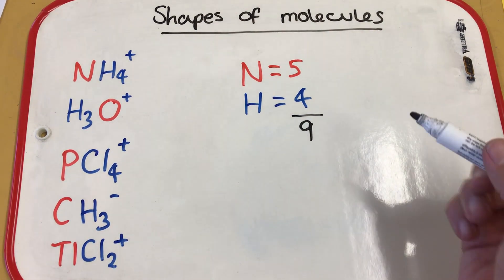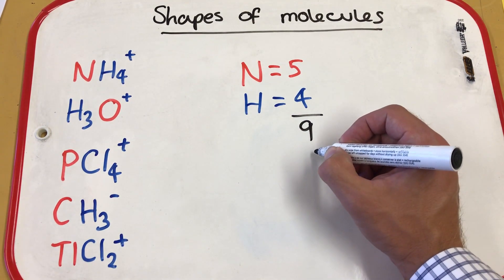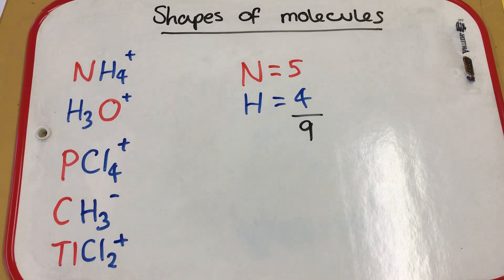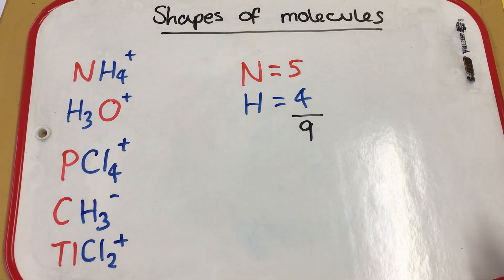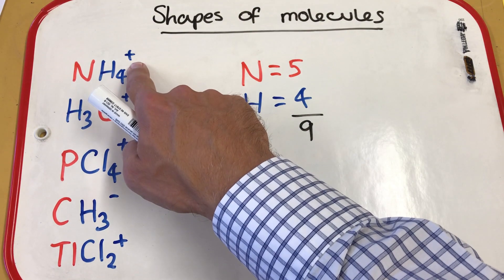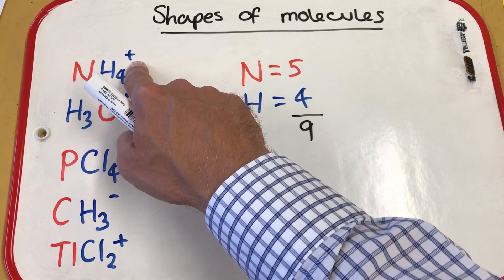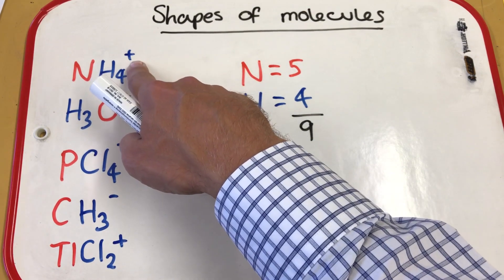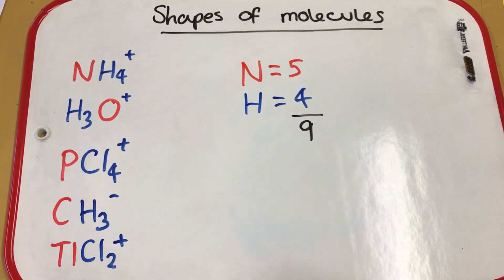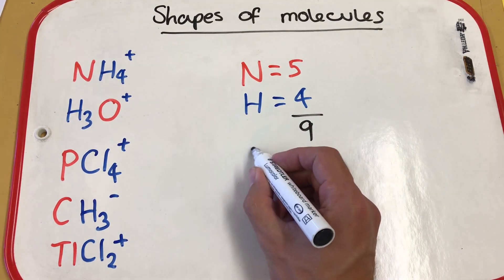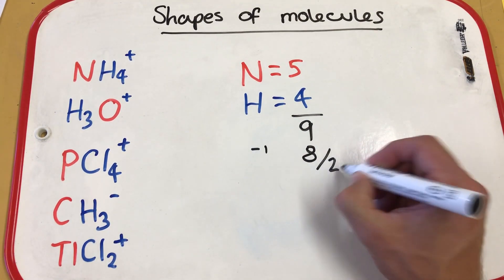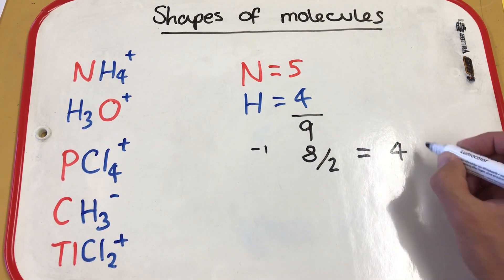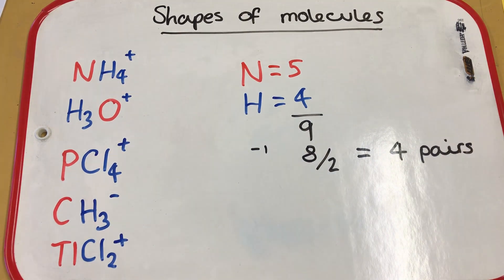Normally we divide by two to work out the number of pairs of electrons, but dividing nine by two gives four and a half, and you can't have half an electron. So we look back at the charge of the ion — we've got a plus charge. A plus charge means there's one extra proton compared to electrons, so we take one electron away to make eight electrons, then divide by two to get four pairs.